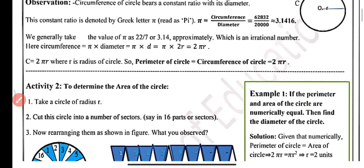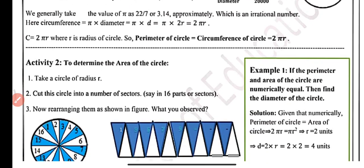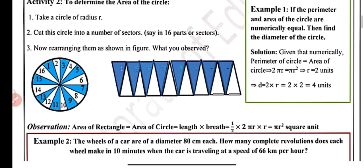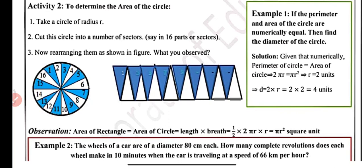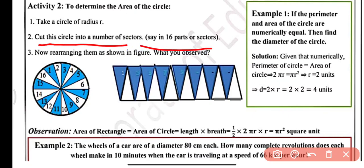Now activity 2: we will determine the area of circle. Take a circle of radius r units and cut the circle into 16 equal sectors or parts. Rearrange them as shown in the figure. Take a circle and divide it into 16 equal parts — you can see 8 are of blue color and 8 are of white color.